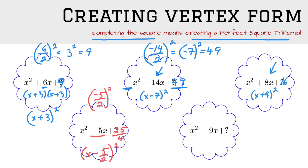Same thing with this last example. The last value is 9 over 2 squared, which is 81 over 4. To factor it, it's x, take the second term following its sign, divided by 2, all squared.